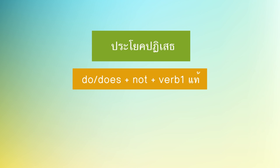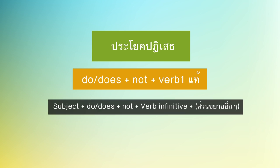For negative sentences, do or does is followed by 'not,' and then the verb in its infinitive form. The structure is: Subject + do/does + not + verb infinitive + other elements.